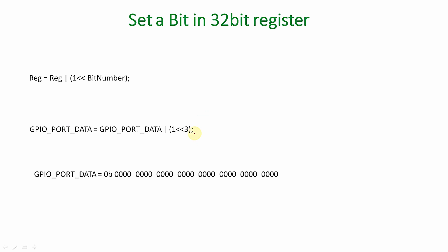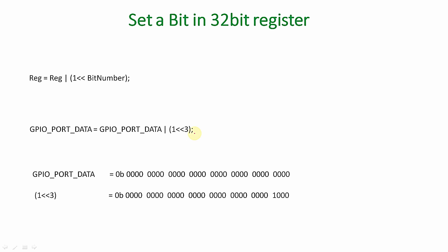Let's assume the initial state of all the bits available in GPIO port data to be all zeros. And 1 left shifted by 3 is nothing but a binary representation — you can clearly see in this particular line that (1 << 3) means the value 1 is left shifted from bit position zero, three times.